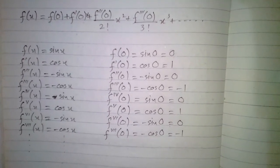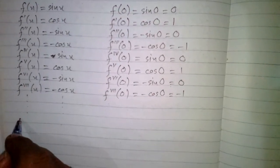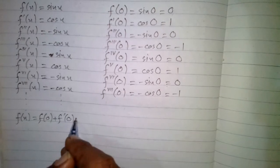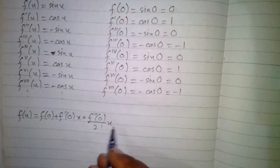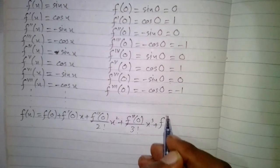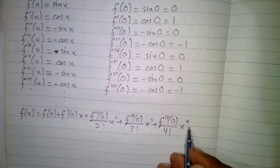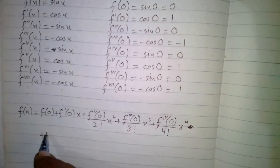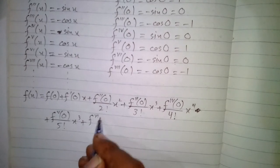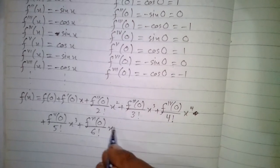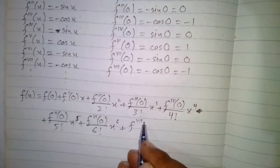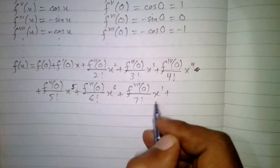Now we apply the Maclaurin series. f(x) equals f(0) plus f'(0) times x, plus f''(0) upon 2 factorial times x squared, plus f'''(0) upon 3 factorial times x cubed, plus f fourth of 0 upon 4 factorial times x to the 4th, plus f fifth of 0 upon 5 factorial times x to the 5th, plus f sixth of 0 upon 6 factorial times x to the 6th, plus f seventh of 0 upon 7 factorial times x to the 7th, and so on.